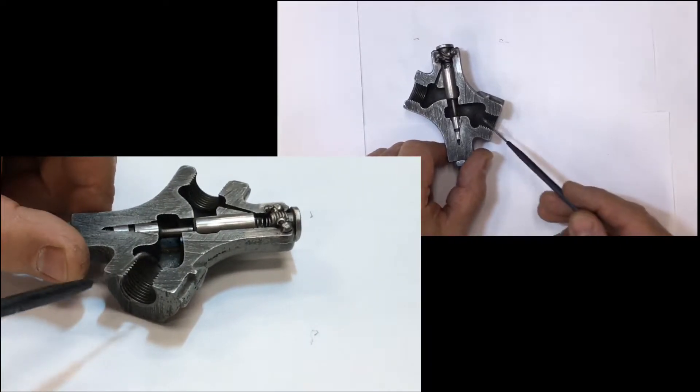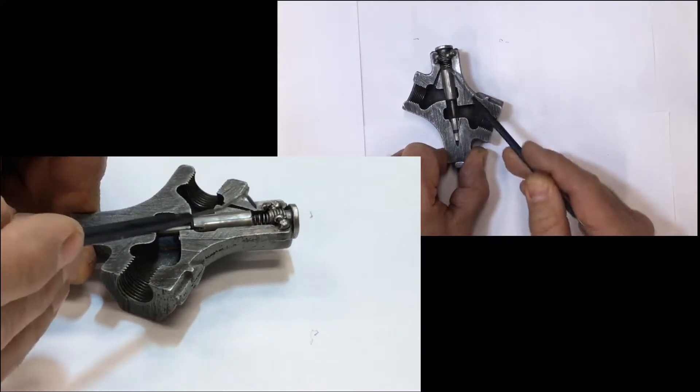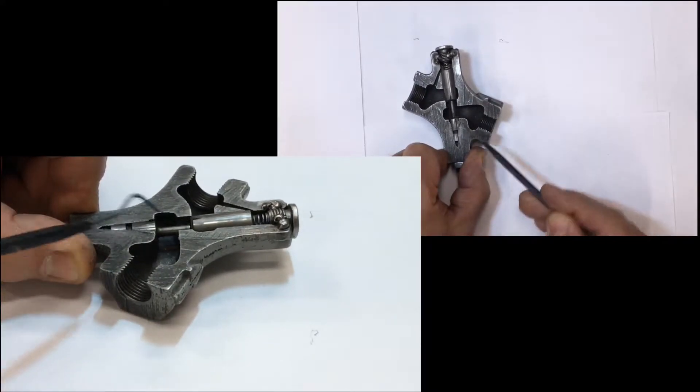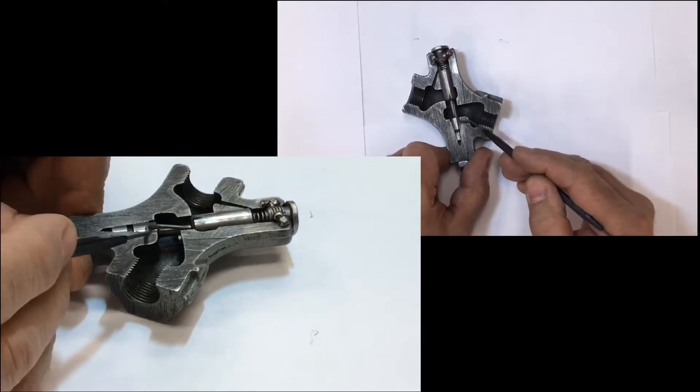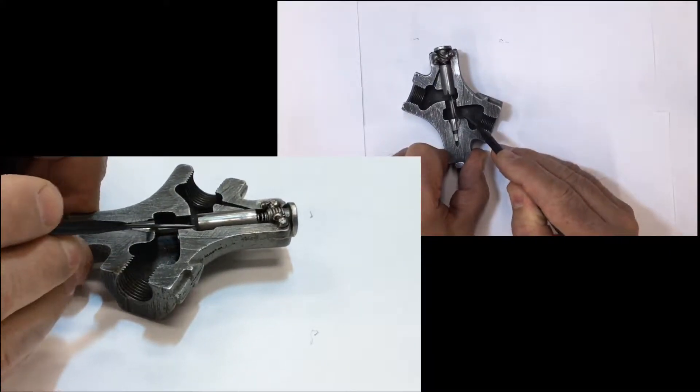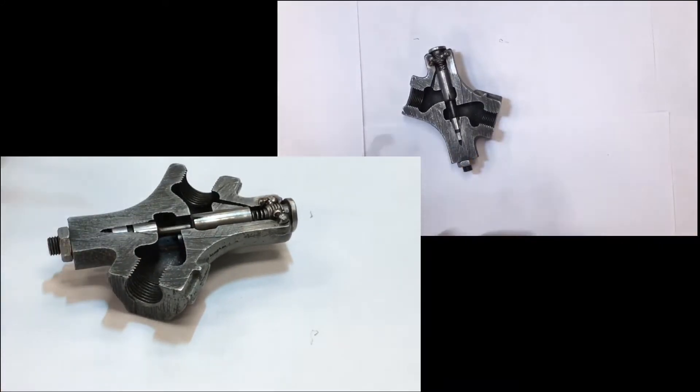What I mean by that is oil would come in, lift this light check ball with this light spring in there, and flow through the other end. Really all it has to overcome is this light three-pound spring behind this check ball.